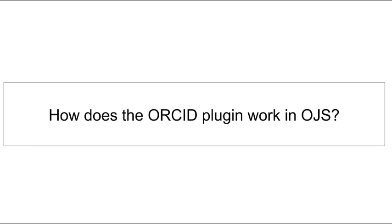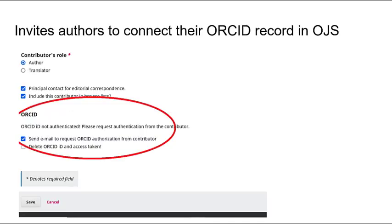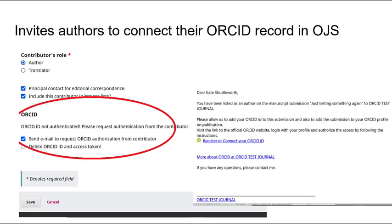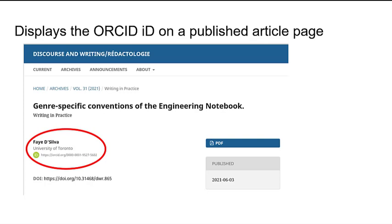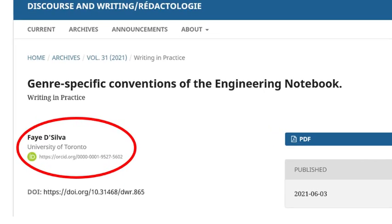Now that we know a bit about ORCID, let's look at the functionality of the ORCID plugin in OJS. The plugin allows journals to send an invitation to authors asking them to connect their ORCID record to their submission in OJS. The plugin collects and authenticates the author's ORCID account by asking them to log in to an existing account or create a new ORCID account through the links provided. Once the author has connected their ORCID record with their article and published the article in an issue, their ORCID ID will display on the published article page with a link to their full ORCID record.